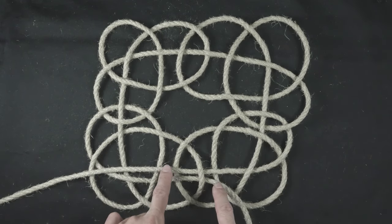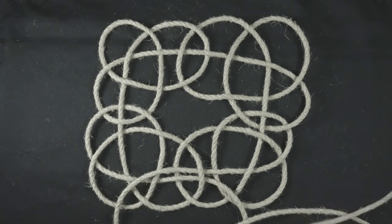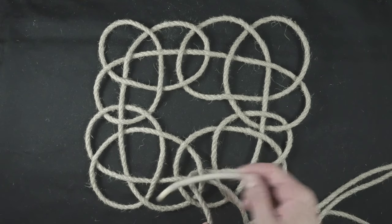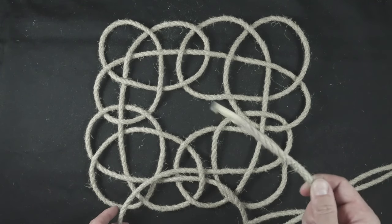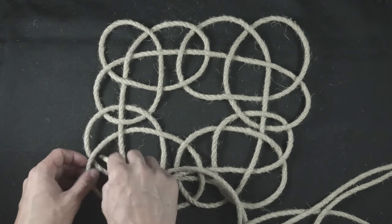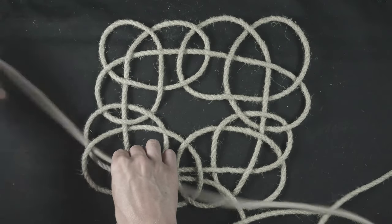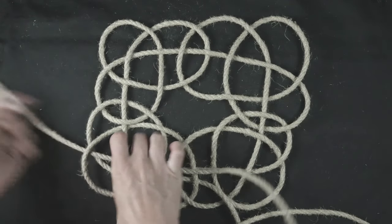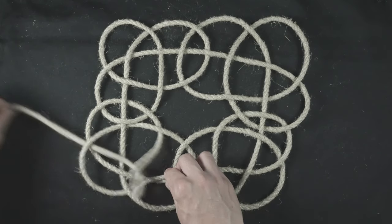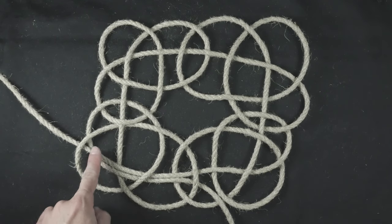Take any of the two ends, and simply follow the other end through the mat until you run out of rope. You can see that the mat is beginning to double up.